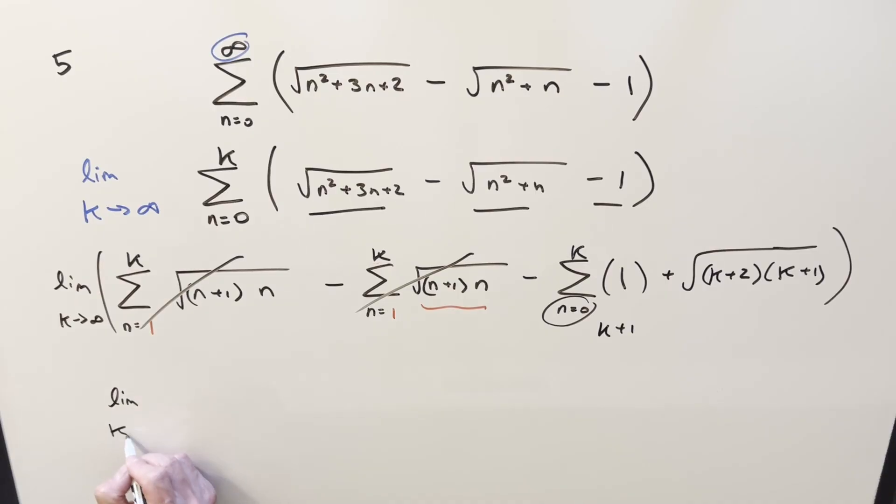And then just cleaning this up, what we're left with is going to be the limit as k is approaching infinity. Reorder it. We'll do the square root first. So we'll have square root k plus two times k plus one. And then here, this thing is just this k plus one. So we have minus k plus one.